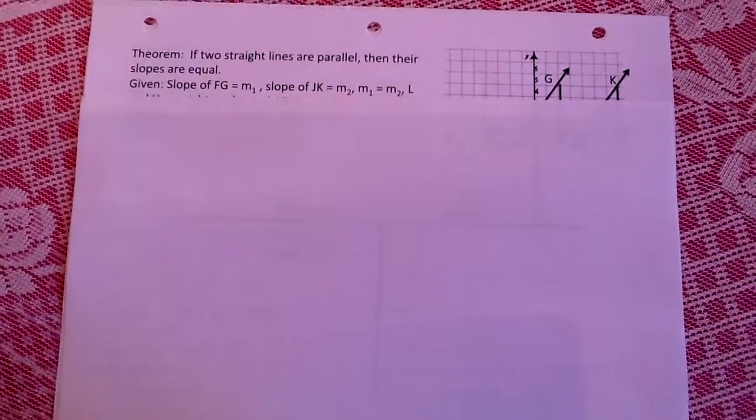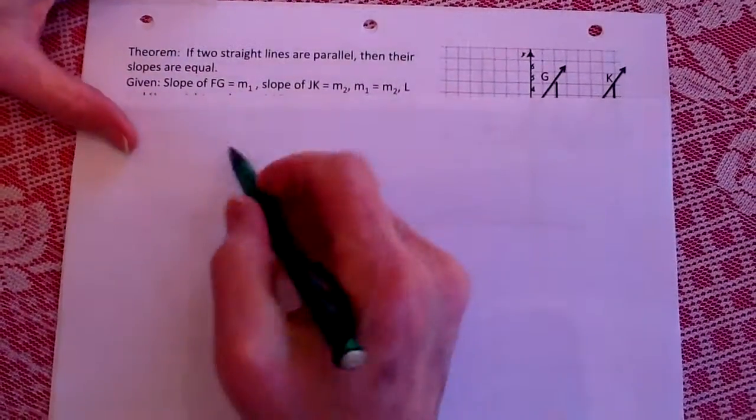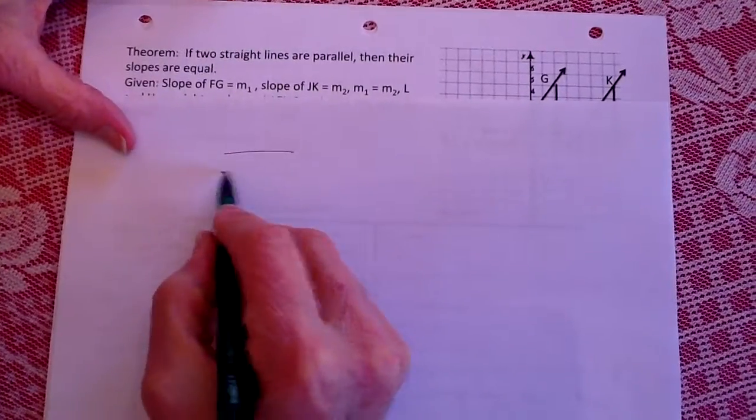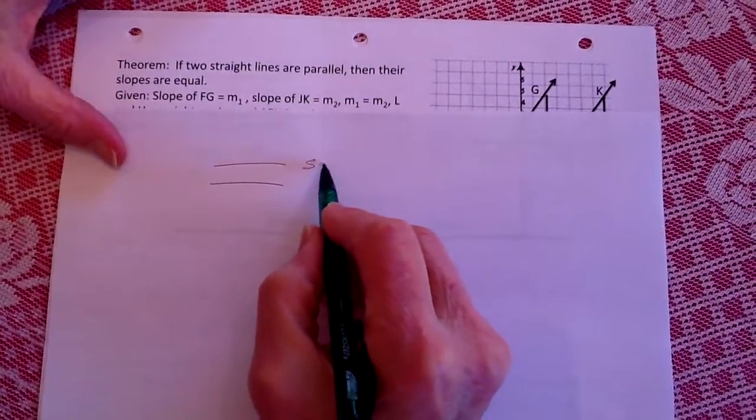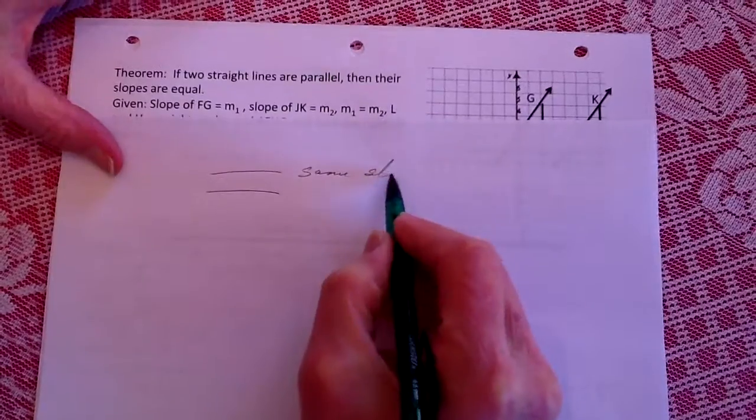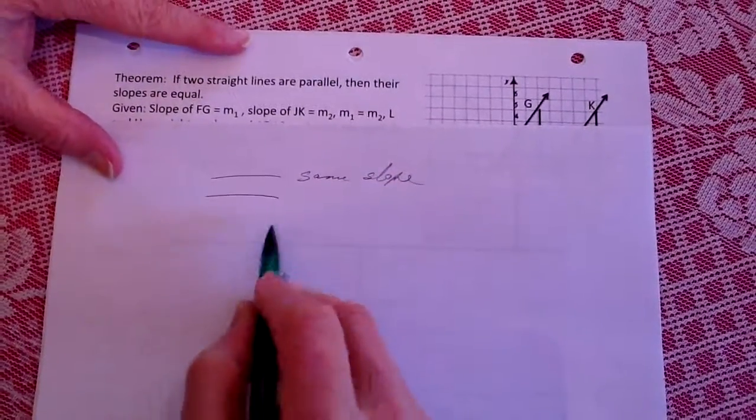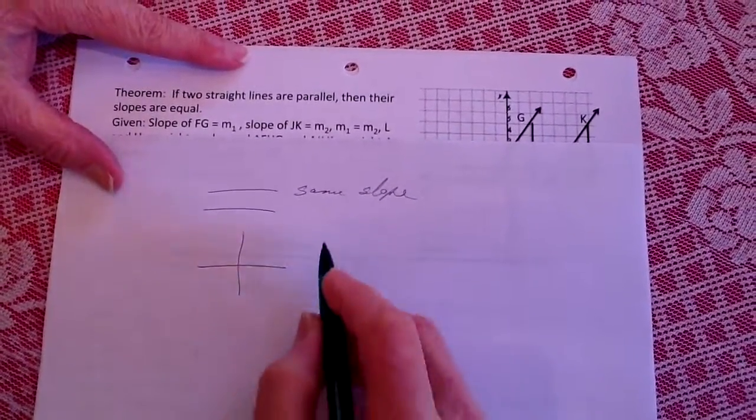Today we're going to be proving that parallel lines have the same slope and that perpendicular lines are the negative reciprocal.